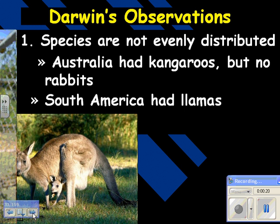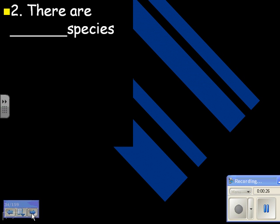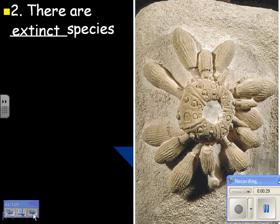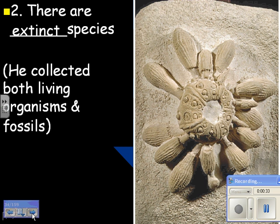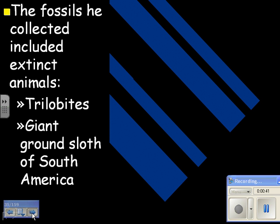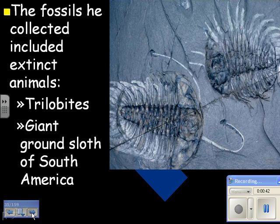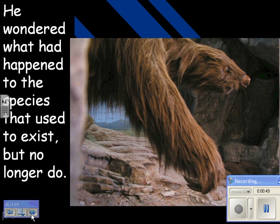South America had llamas. There are also extinct species — species that existed but don't anymore. He collected both living organisms and fossils. The fossils included extinct animals like trilobites and the giant ground sloth of South America. He wondered what had happened to the species that used to exist but no longer do.